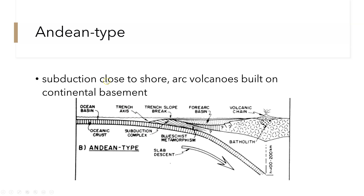The Andean type is when we have subduction close to shore with arc volcanoes built on a continental basement. We see subduction of the oceanic plate beneath the continental plate, accretion along their interaction forming the subduction complex, and metamorphic rocks in the trench. There is a forearc basin where sediments collect between the trench accretion and the continental crust. Batholiths form from magma upwelling through the continental crust, driven by ocean water added to the mantle lowering its melting temperature.